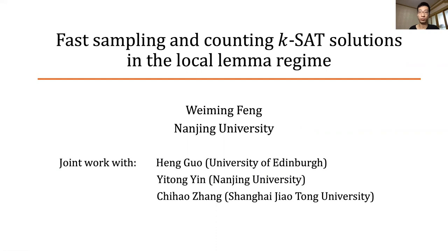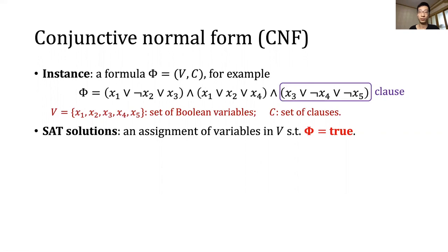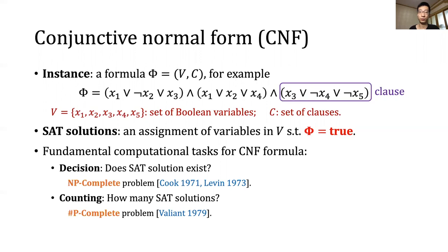Our work centers on a CNF formula phi, which is a conjunction of one or more clauses. We use V to denote the set of Boolean variables and C to denote the set of clauses. A solution is an assignment of variables in V such that all the clauses are satisfied, and then F is true. There are two fundamental computational tasks for CNF formulas: decision and counting.